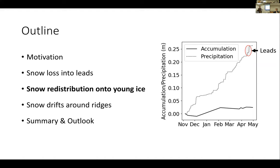So snow lost into leads probably accounted for some of the discrepancy, specifically the precipitation that happened during those mid-April events, but we don't think it's responsible for the majority of the snow loss. While studying snow loss into leads, we also noticed another curious thing about snow redistribution on Arctic sea ice: snow redistribution on top of young ice.